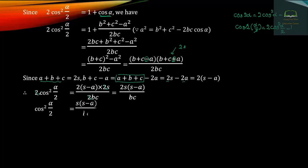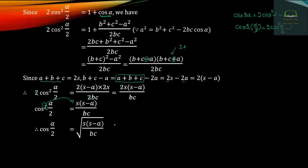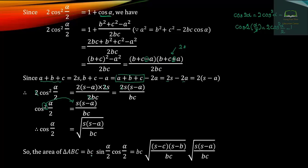We have S into S-A over BC. cos(A/2) equals square root of S into S-A over BC. Now cos(A/2) into square root gives the aligned ABC formula.